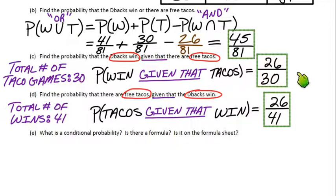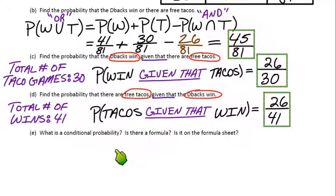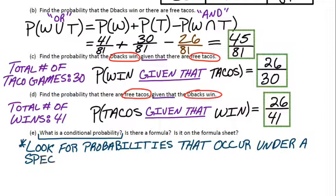So these two probabilities are a little different from the first one we did. The first one was really general — out of the whole group, how many games did they either win or give free tacos? Parts C and D both had very specific conditions. Part C: we're looking at only the games that tacos got given away. Part D: we're looking at only games that they actually won. That's why the denominators are different. Part E introduces conditional probability — probabilities that occur under a specific condition.